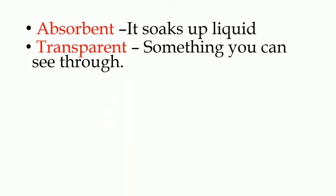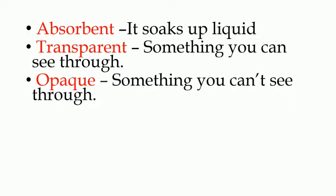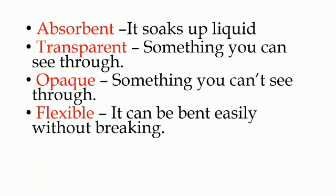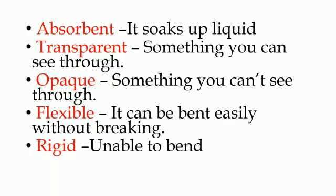Transparent: something you can see through. Opaque: something you can't see through. Flexible: it can be bent easily without breaking. Rigid: unable to bend.